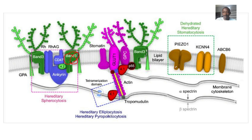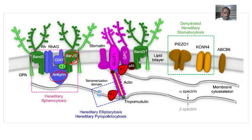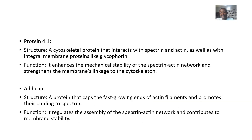Now ankyrin comes in. Ankyrin is a protein that links spectrin to band 3. So band 3 is here, and spectrin links here, with ankyrin sitting in between band 3 and spectrin. Ankyrin anchors the spectrin-actin network of the red blood cell membrane, stabilizing the cytoskeleton and maintaining membrane integrity.